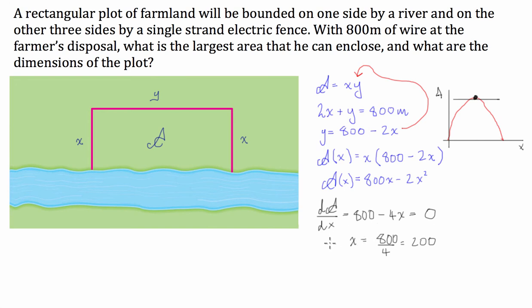What we can also do is we can calculate what y is because we know that y is equal to, using this function here, 800 minus 2x which is going to be equal to 400. So we know that x is equal to 200 meters so the width is going to be 200 meters, the length is going to be 400 meters, and then we can finally write hence the area at the maximum is going to be equal to 200 times 400 which is 80,000 meters squared or 8 hectares.